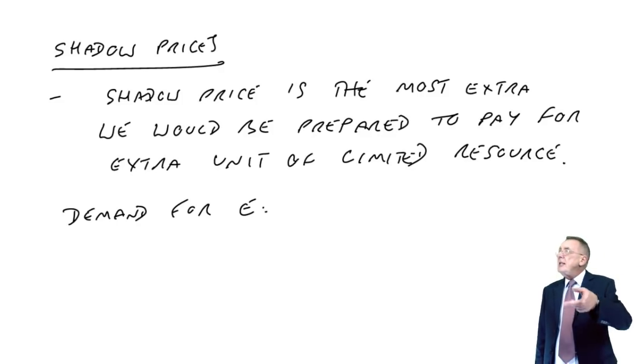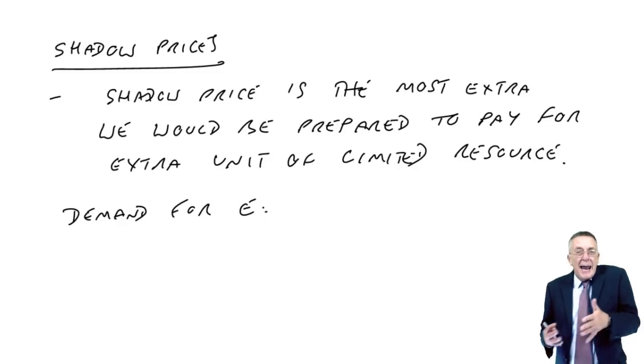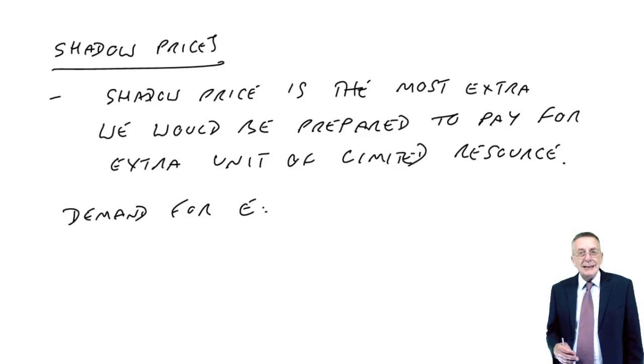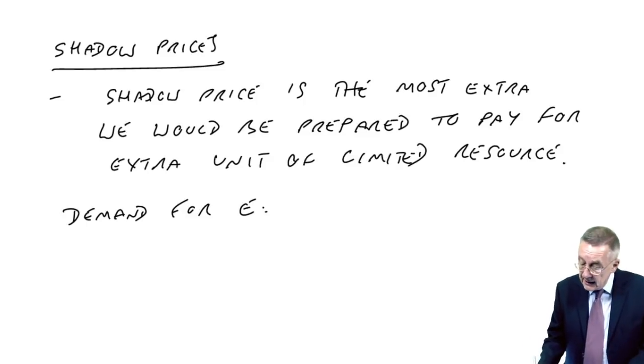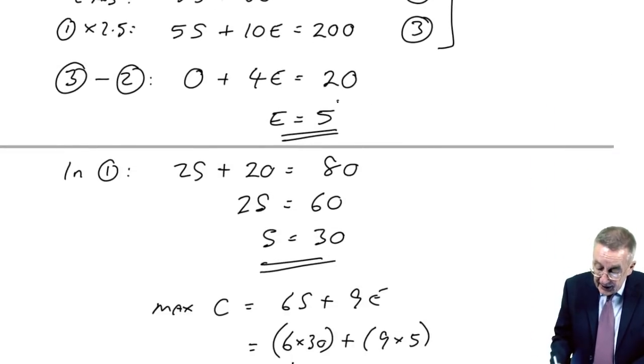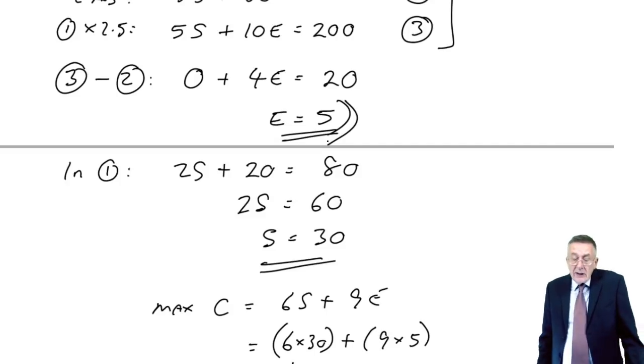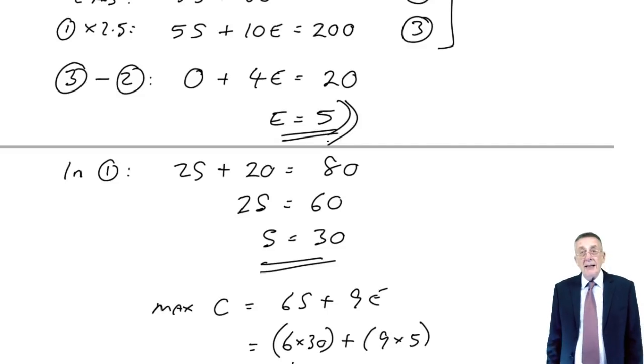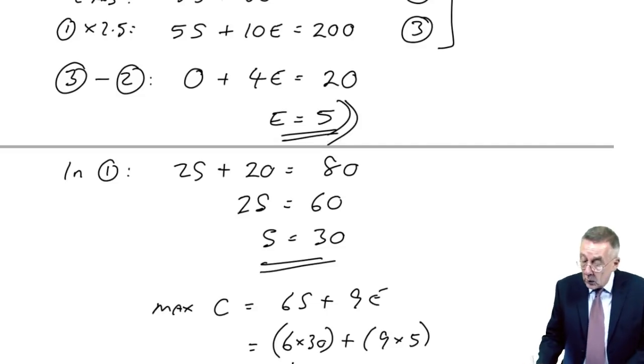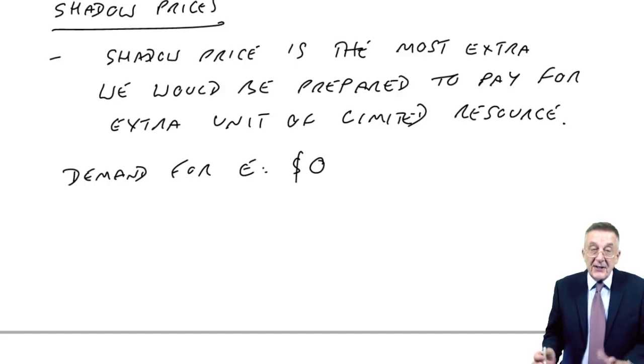At the moment, the maximum demand is 10 units. Suppose some way I could pay some money and get the demand up to 11 units. Would it be worth paying someone to increase the demand up to 11? No, it wouldn't. And why wouldn't it? Because the other constraints limited us to only producing five executive. We're not going to produce more than five anyway. So even if the demand was 11, it wouldn't change what we ended up producing, it wouldn't give us any more money. So there'd be absolutely no point in paying somebody to increase the demand for E. The shadow price would be zero.